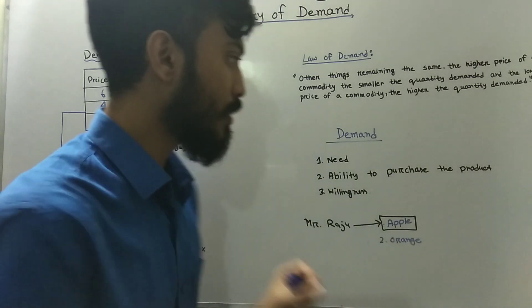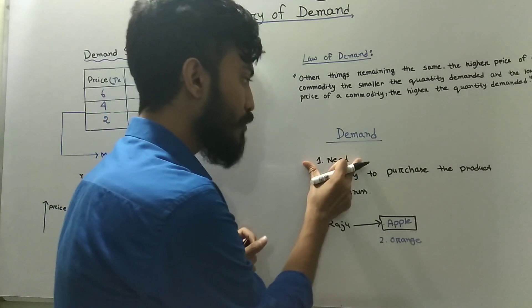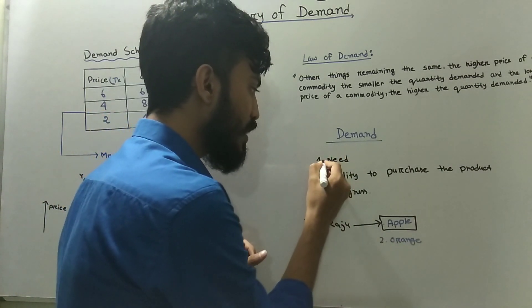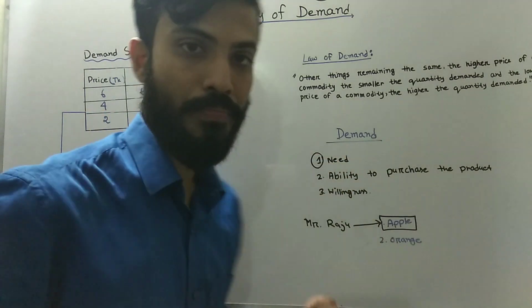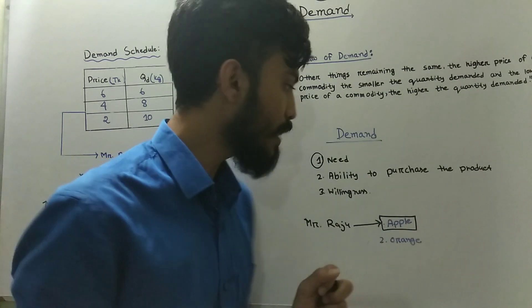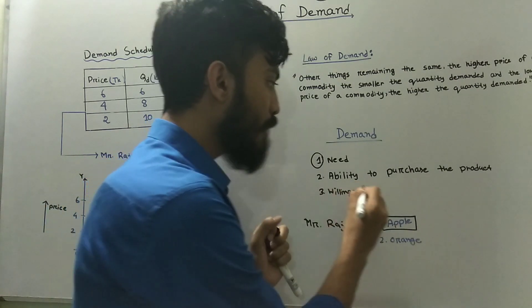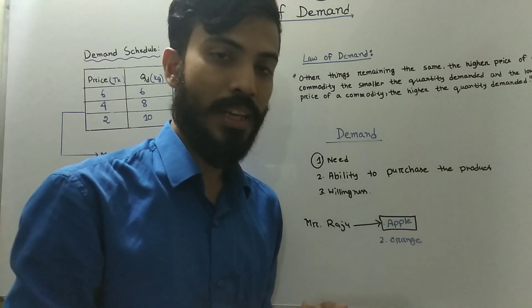It is important: the first element is the need, and the second element is the ability to purchase the product.